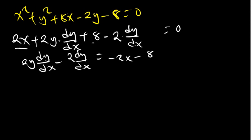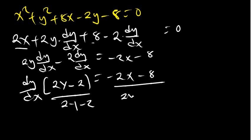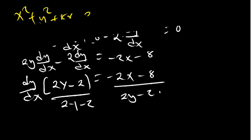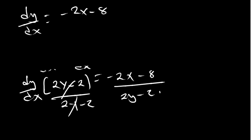Making dy/dx the subject: move 2x and 8 to the right side. We remain with 2y dy/dx − 2 dy/dx = −2x − 8. Factoring out dy/dx: dy/dx(2y − 2) = −2x − 8. Dividing both sides by (2y − 2) gives dy/dx = (−2x − 8) / (2y − 2).